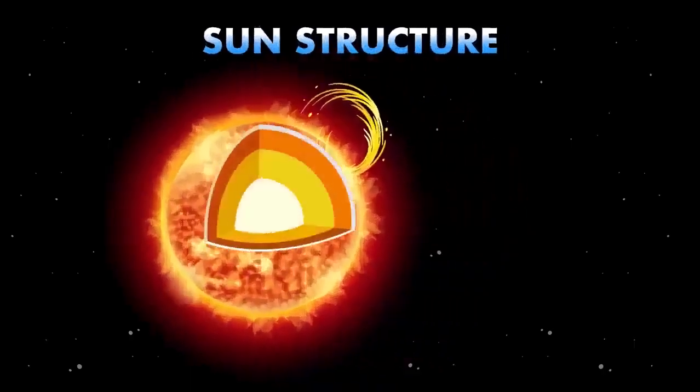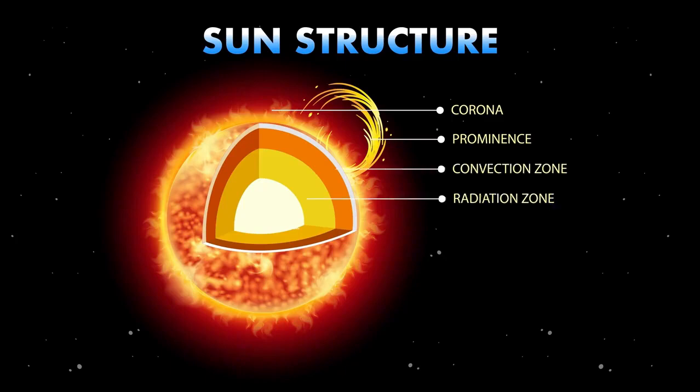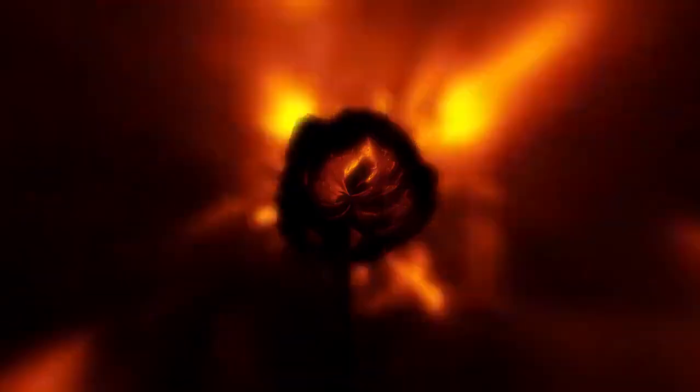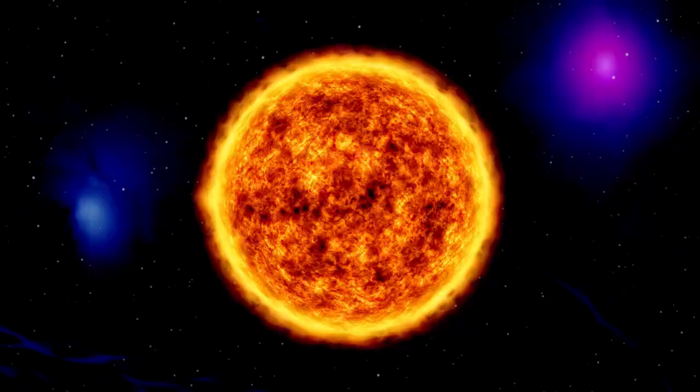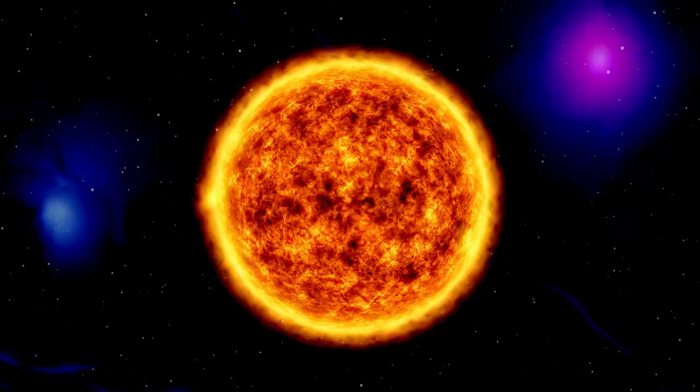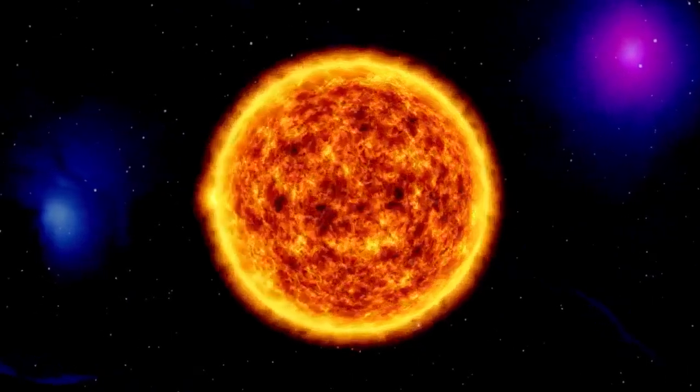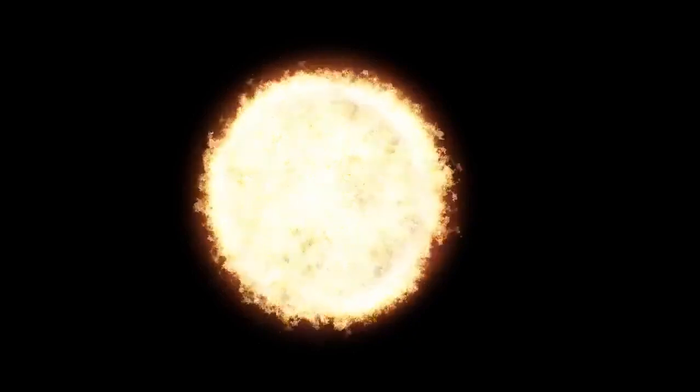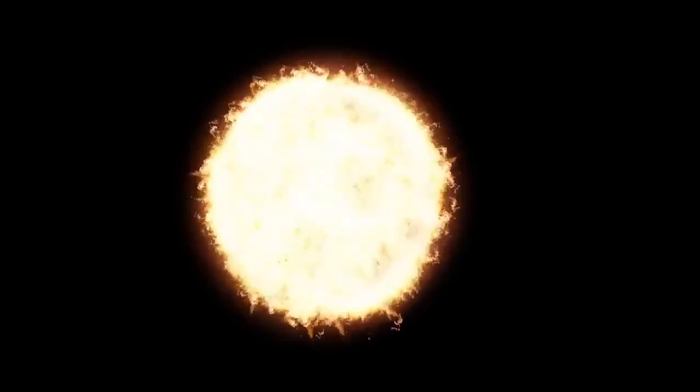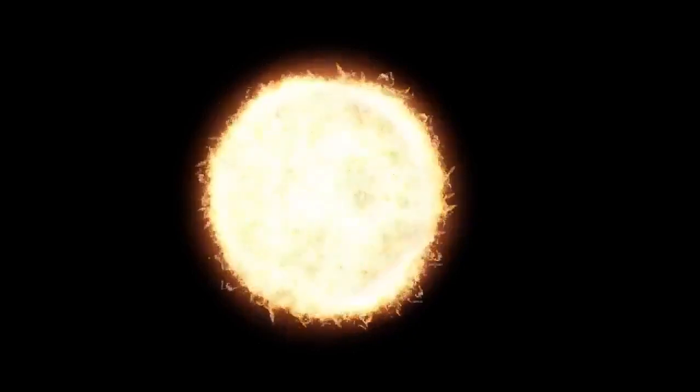As hydrogen fusion slows in its core, the outer layers expand, causing the star to grow even larger. Simultaneously, helium accumulates around the core, triggering a secondary fusion process known as helium envelope burning. In this phase, helium atoms fuse to create heavier elements like carbon and oxygen, releasing bursts of energy that counteract the gravitational forces trying to collapse the star.